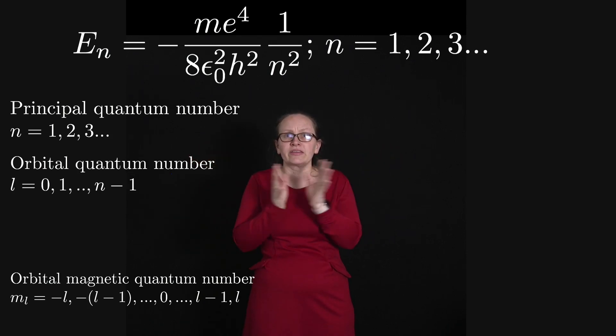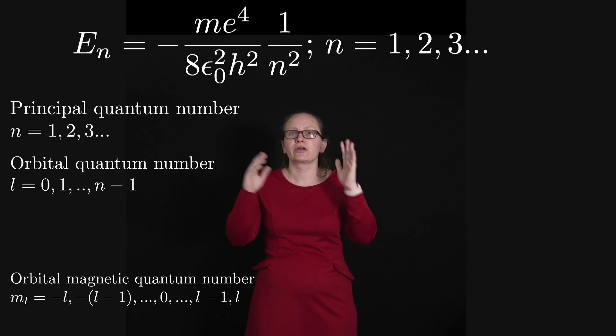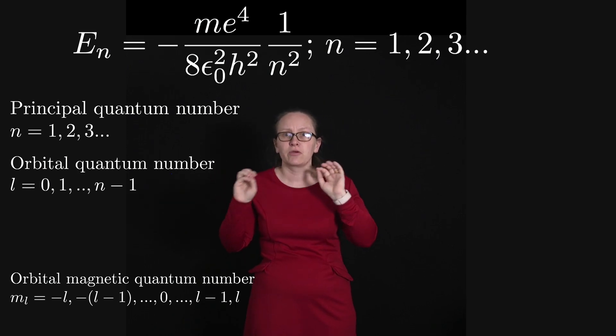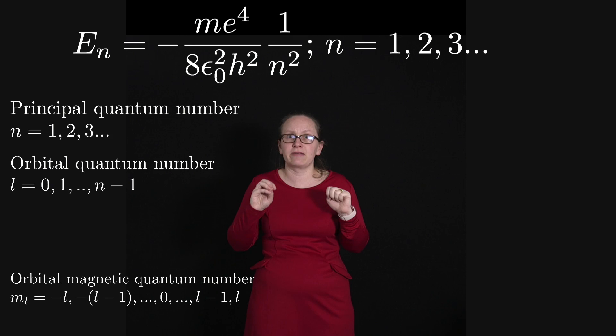Now this leads us to one of the differences for the predictions of the Bohr model compared to using Schrödinger's equation. With the Bohr model, the angular momentum of the state was given by n h-bar. So for the ground state with n equals one, we predicted that the ground state electron would have angular momentum.